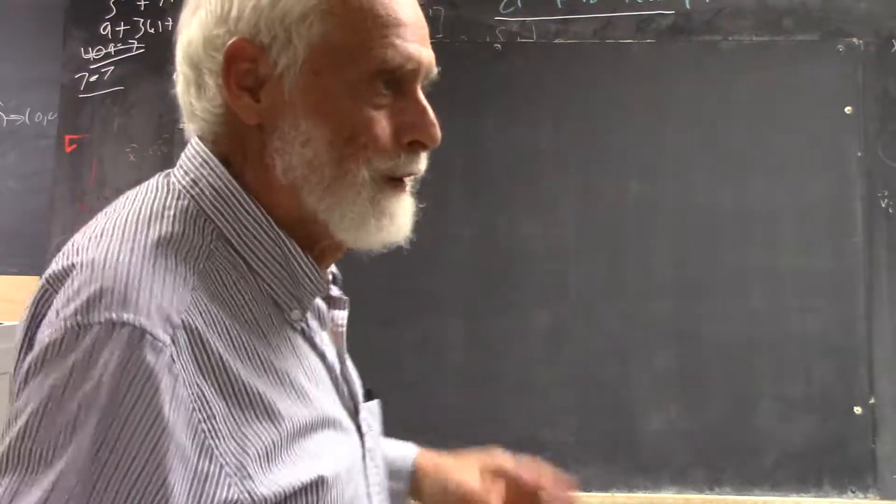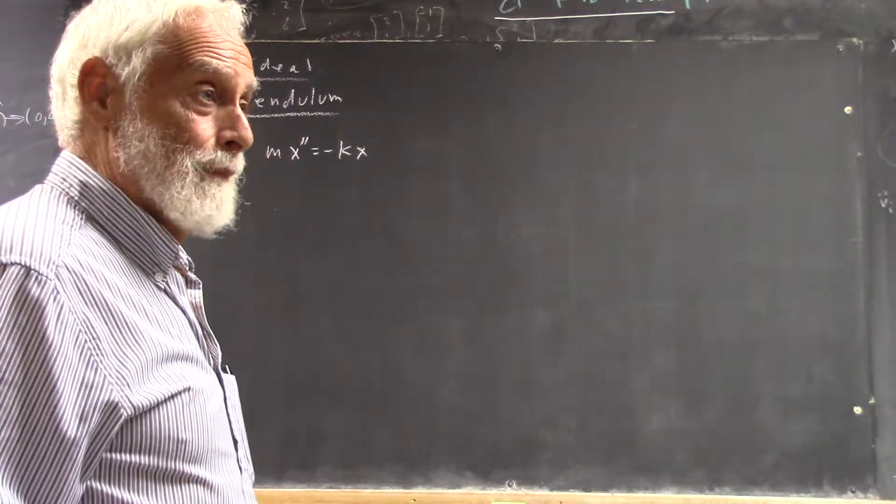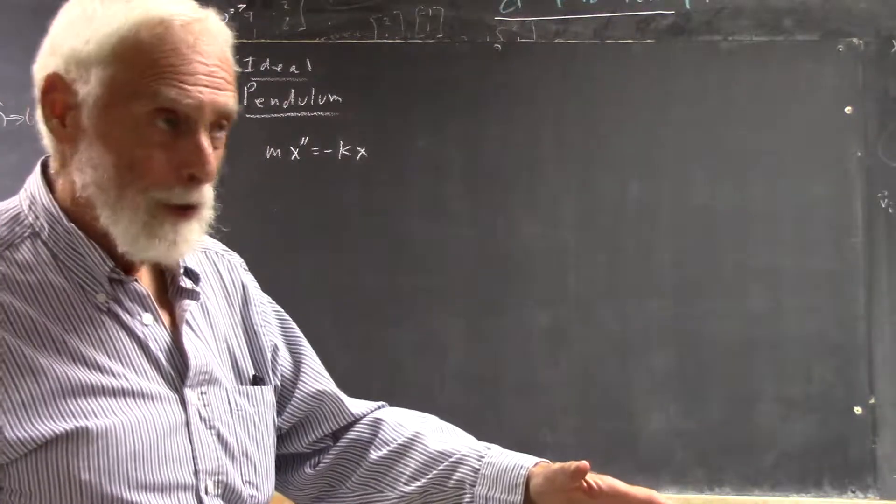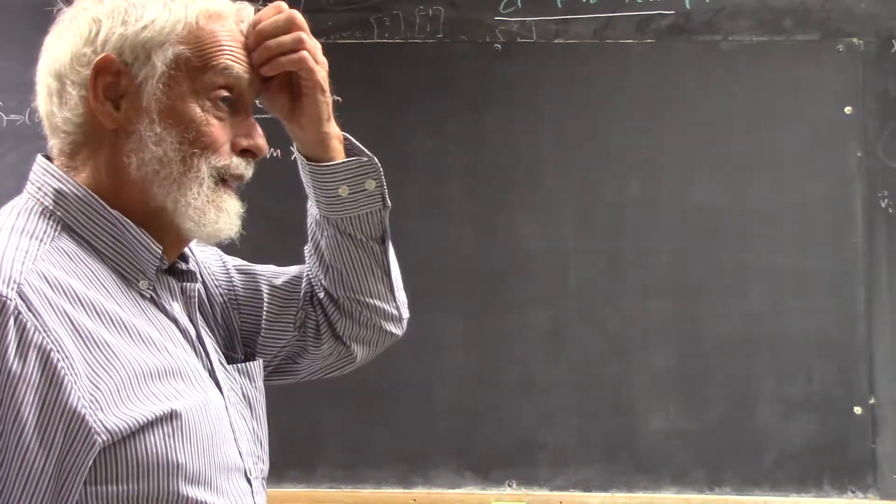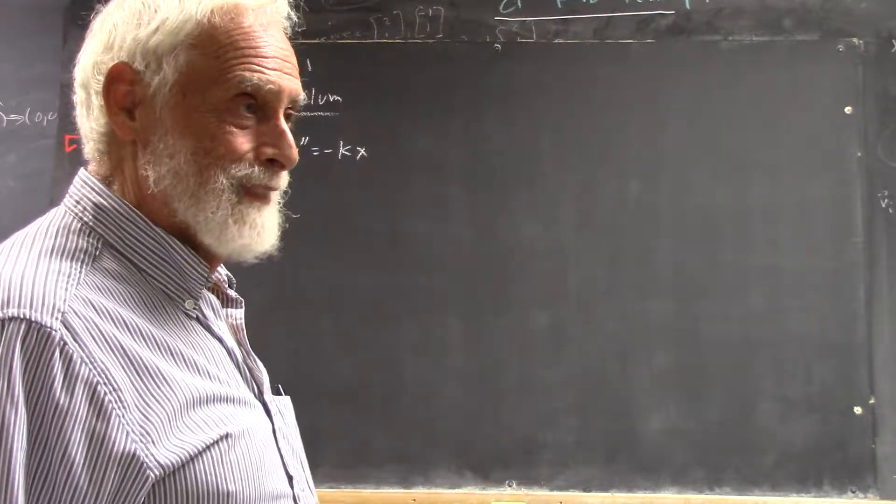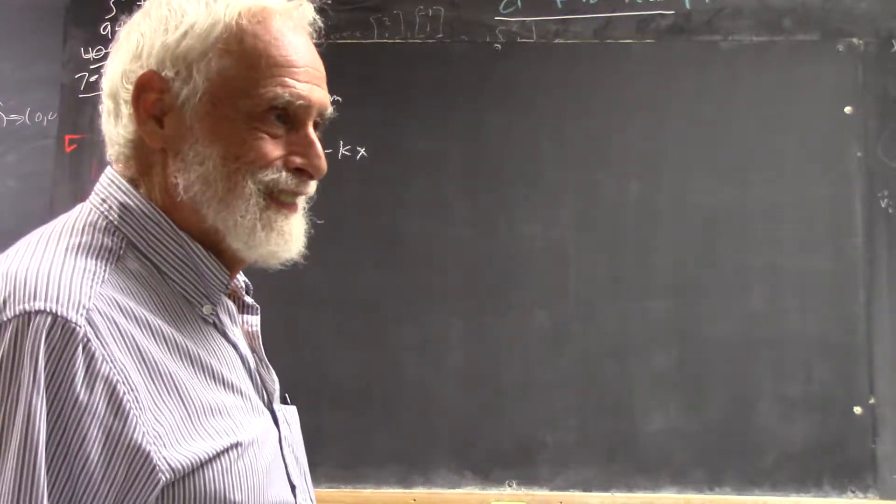For an ideal pendulum, and I guess I probably ought to put the word ideal here because in a minute we'll also look at what happens if it's got air resistance. It's a differential equation that you get, which is something that my physics students are not going to be able to do. I'll mention it. I'll say, yeah, take differential equations, you'll see.